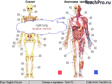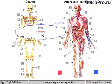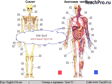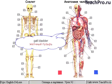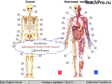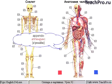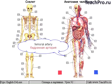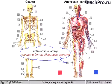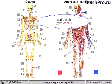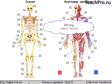Right lung, liver, bile duct, gallbladder, duodenum, small intestine, appendix, femoral artery, anterior tibial artery, aortic arch, left lung.